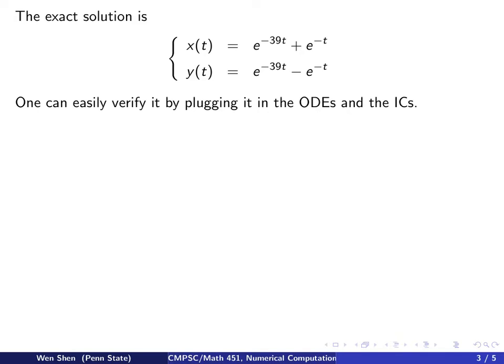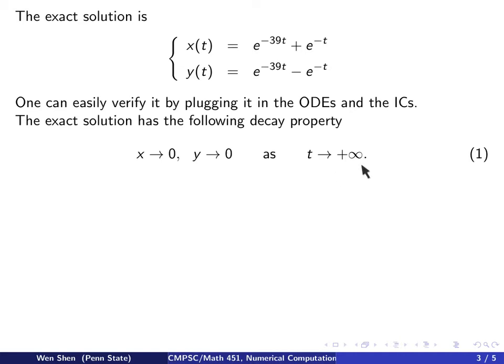Okay, so in the solution, actually you have two components. One varies with the rate negative 39, exponential decay. Another one varies with the rate negative 1, another exponential decay. Since everything is decaying, then we have this property for the exact solution. That is, as time grows to infinity, both x and y approach zero asymptotically.